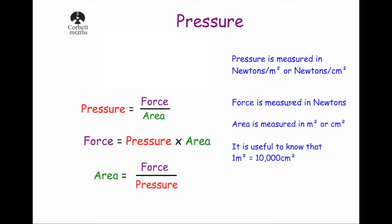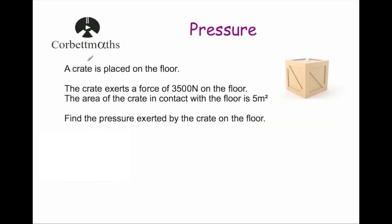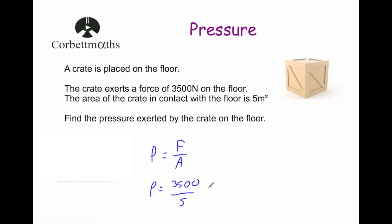So pressure is equal to force divided by area. Let's look at three exam questions. First: a crate is placed on the floor. The crate exerts a force of 3,500 newtons on the floor, and the area in contact with the floor is 5 metres squared. Find the pressure. Pressure equals force divided by area: 3,500 divided by 5 gives us 700 newtons per metre squared.